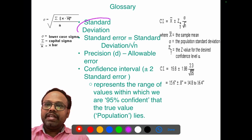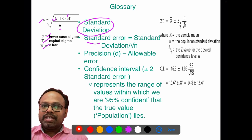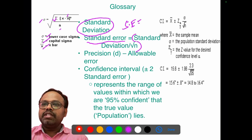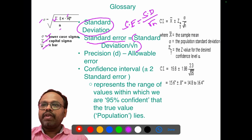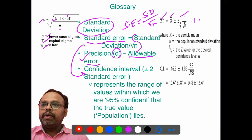We should be clear about what standard deviation is. Standard deviation is given by the formula: the square root of the summation of (x minus x-bar) squared, divided by n. From there, we should know about standard error, which is given by the formula: standard deviation divided by the square root of n. Precision, as mentioned earlier, is the allowable error, usually denoted as d. The confidence interval is the mean plus or minus two standard errors, or 1.96 (z-alpha/2) times the standard error.